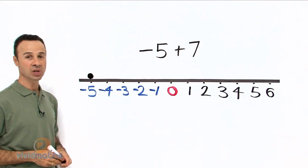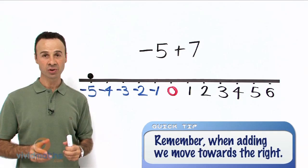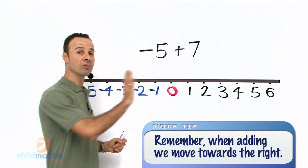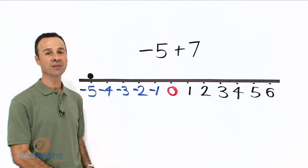The second step is to jump in the direction of the plus 7. Now as I mentioned earlier, plus 7 means to the right. Remember if it was a minus 7 you would move to the left. So we are moving to the right because it is plus 7.